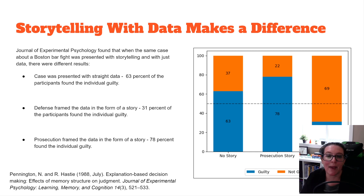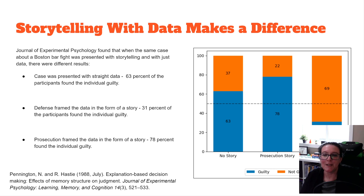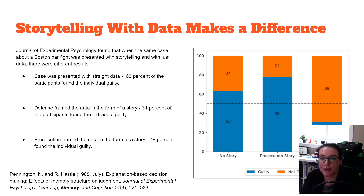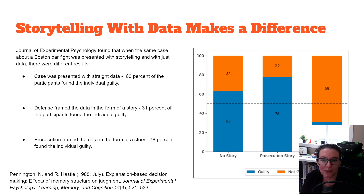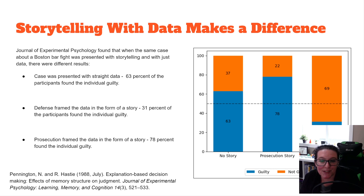Storytelling with data does make a difference. A Journal of Experimental Psychology study found that when the same case about a Boston bar fight was presented to different groups as a research project, how the data was presented changed the ruling. When the case was presented with just straight data — here's some straight facts — 63% of the participants found the individual guilty. When the defense framed the data in the form of a story, only 31% found the individual guilty; 70% sided with the defense. When the prosecution framed the data in the form of a story, 78% found the individual guilty.